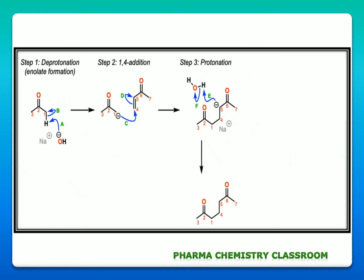To make the reaction even more simple, I am going to summarize all the steps in this single slide. Step one is deprotonation: a base abstracts the acidic hydrogen from Michael donor to form a carbanion. This carbanion intermediate reacts with the beta carbon of our alpha-beta unsaturated carbonyl compound — the Michael acceptor — and we get the intermediate enolate, which then abstracts the proton from the water molecule. Protonation takes place and we get the final Michael addition product.